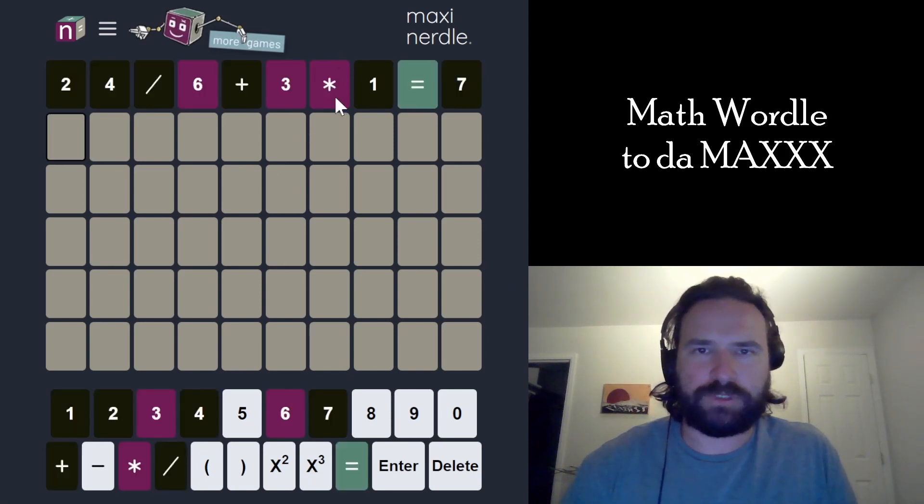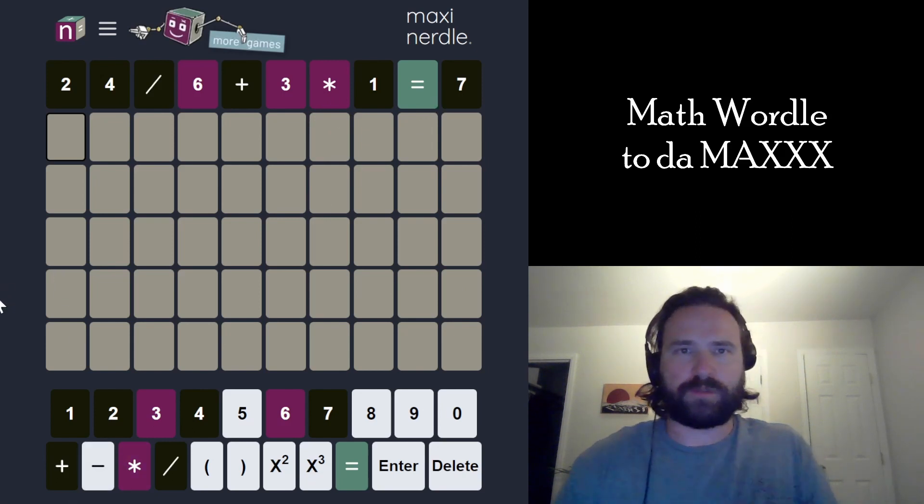All right, we have multiplication, which is a little scary. It is equal to a single-digit number, so we're definitely going to need subtraction in here to make this number smaller.